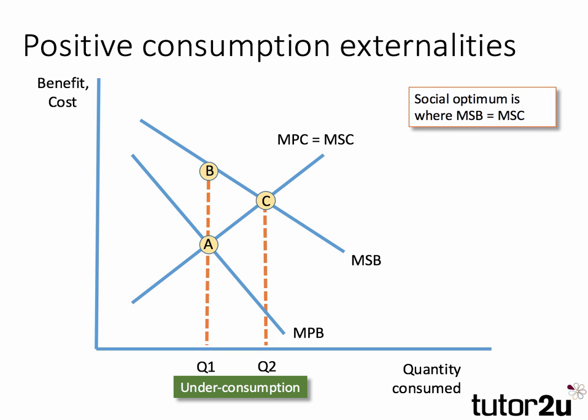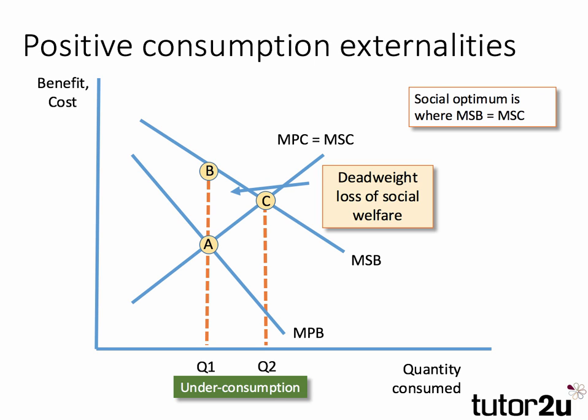At Q1 we're missing out on some external benefits equal to A, B, and the deadweight loss of welfare from under-consumption is shown by a welfare loss triangle A, B, C. So in this situation we're under-consuming products with positive consumption externalities. For more on this, see our videos on merit goods and special revision sessions on positive externalities.